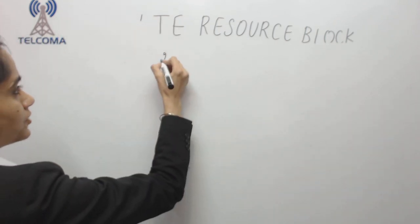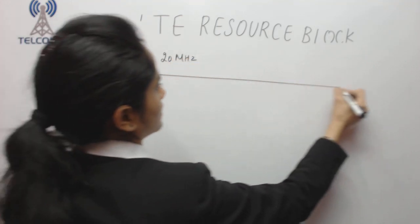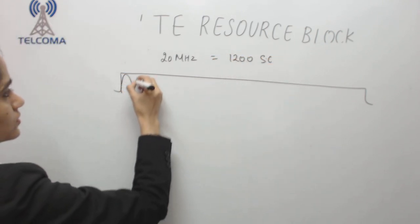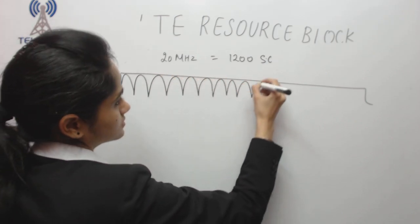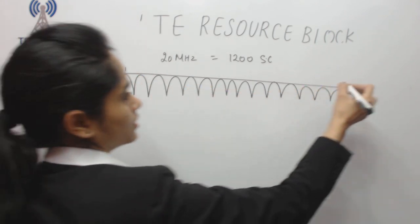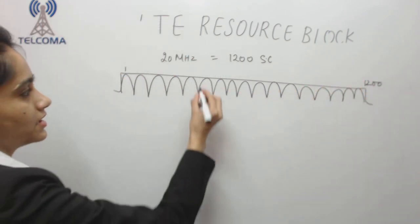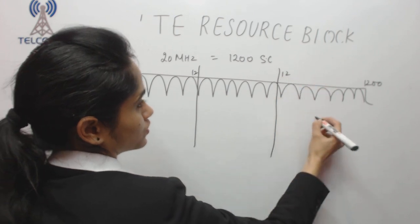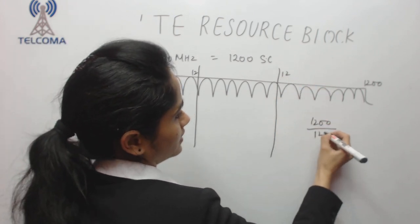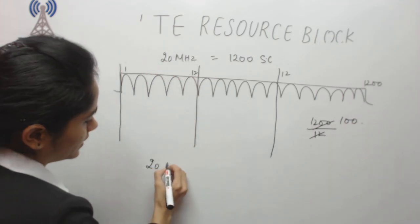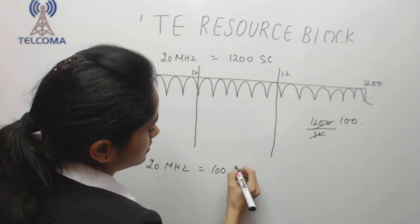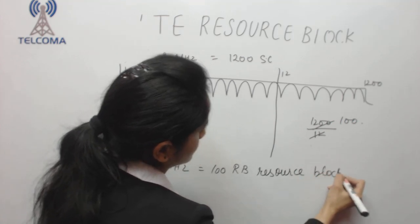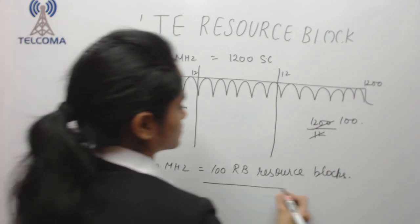For 20 MHz, we have 1200 sub-carriers. Dividing into groups of 12: 1200 ÷ 12 = 100. So for 20 MHz bandwidth, we have 100 resource blocks. These 100 RBs are the units of frequency and time that carry our data.